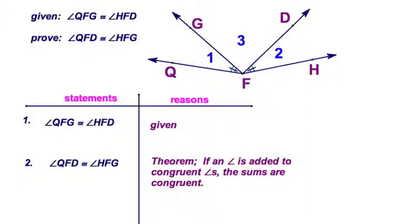Let's read this: if an angle—that's angle three—is added to congruent angles—those would be one and two—then the sums are congruent, and those sums would be ∠QFD and ∠HFG. And this one is done.